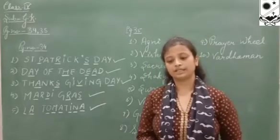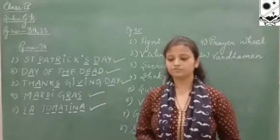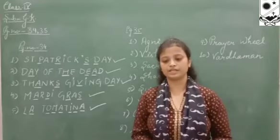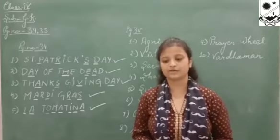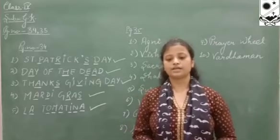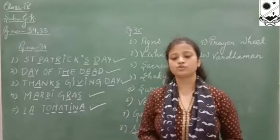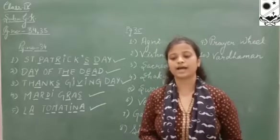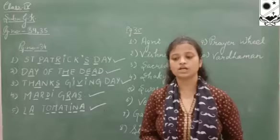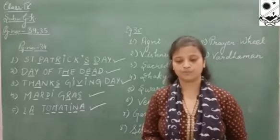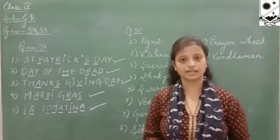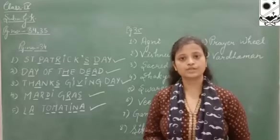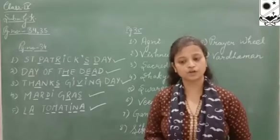Next is page number 35, which is about mythologies and religion. Here you have to choose from the clue box and write the correct name for each description given below. The first one is the Hindu god of fire — so who is the Hindu god of fire?